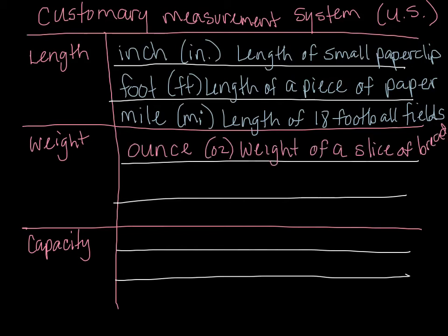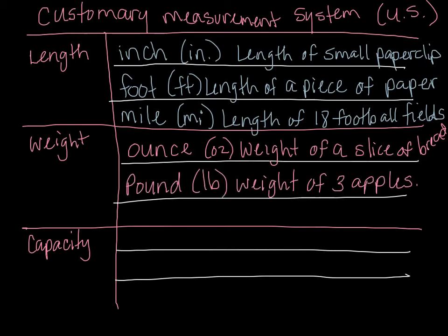For weight — how much something weighs — an ounce, abbreviated Oz, is the weight of a slice of bread. If you took one slice of bread out of the bag and held it, that would be about the weight of one ounce — not very much. A pound, abbreviated LB because pound in Spanish is libras and we've adopted that abbreviation, would be about the weight of three apples. Hold three apples in your hand — that's about a pound.